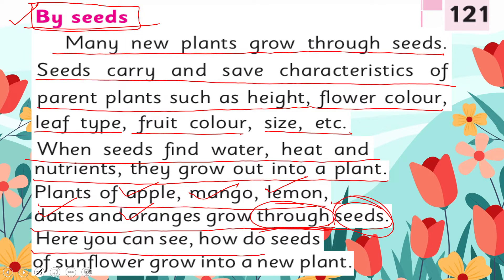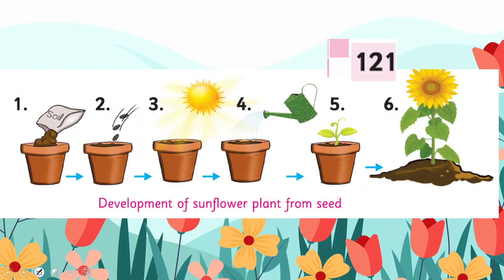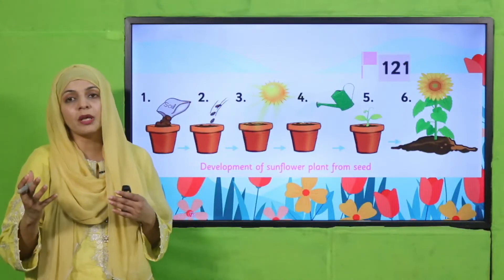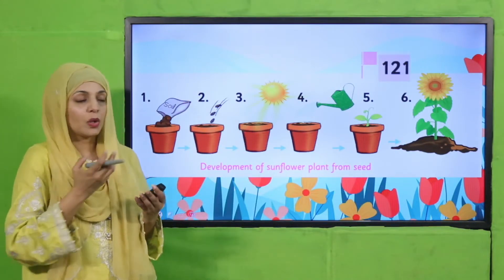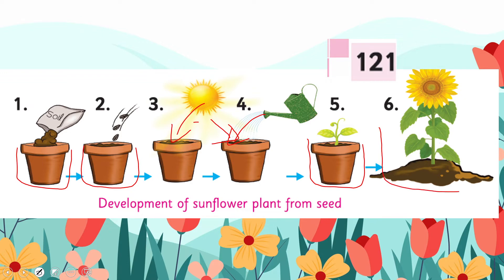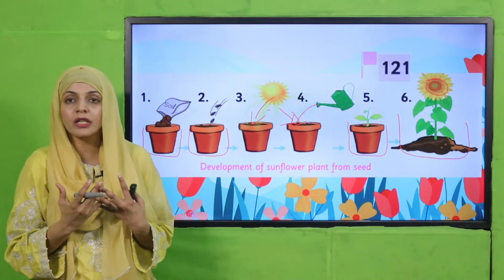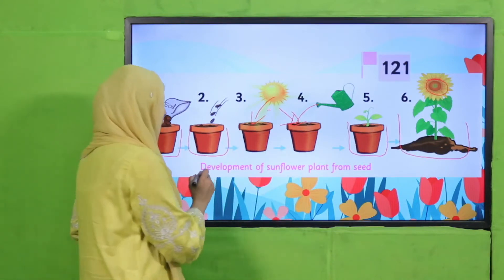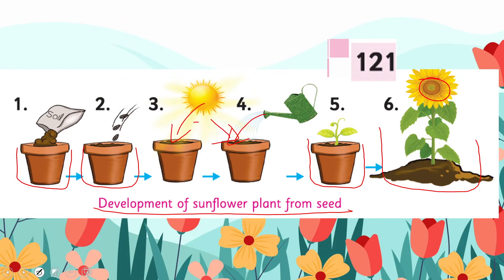Here you can see how seeds of a sunflower grow into a new plant. First, we put soil, then sow some seeds. After that, with all necessary conditions — sunlight, water, and air — it germinates. Then it starts producing flowers, and from the flowers seeds grow again, and the cycle continues. This is the development of a sunflower plant from seeds.